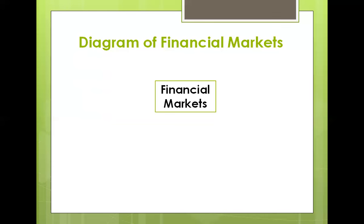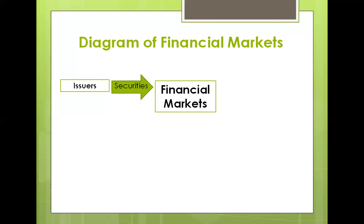Those who have money, those who do not have money, those who need money. For example, there is an issuer — the issuers of securities in the financial markets. These receipts are financial instruments, including securities which may be freely bought or sold in the financial markets. So who will buy these securities?